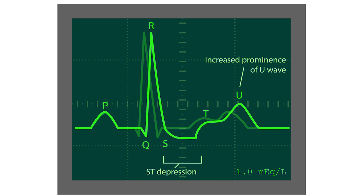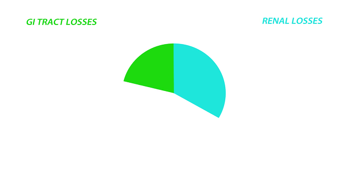Hypokalemia-induced changes in heart rhythm can lead to serious heart problems, so restoring serum potassium is a critical first step in treating hypokalemia, as well as treating the underlying cause. The two most prominent causes are renal losses and GI tract losses.